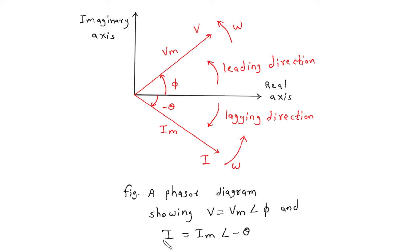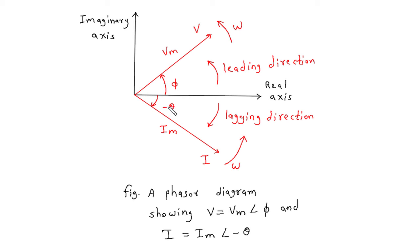Then if we have to draw a phasor diagram for I equal to Im at an angle of minus theta — since it is minus, it will be in the lagging direction. Im is the maximum or peak value of current, this will be current I, and this will be the phase angle negative theta. This is how we can draw a phasor diagram.